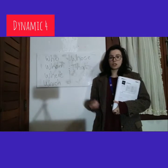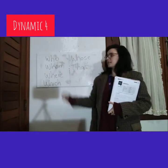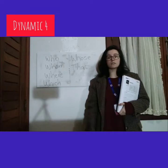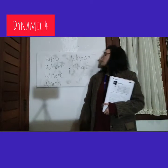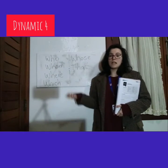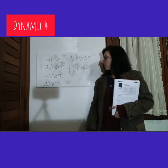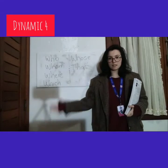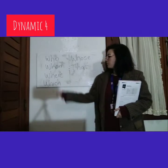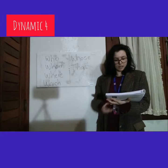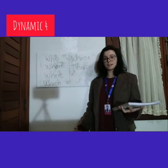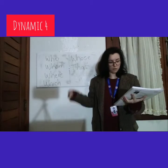WHO and WHOM give essential information about a person we are talking about. Without this defining relative clause, we can't understand the phrase. We use WHO and WHOM to talk about people. Then we have WHERE for places — to talk about places. We have WHICH, which is for objects and animals — we use WHICH to talk about things and animals.